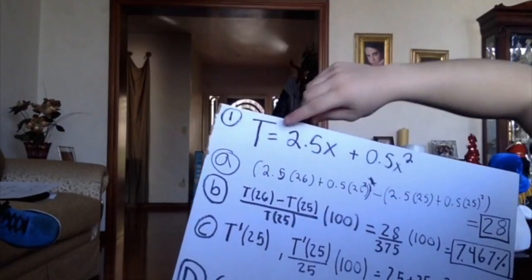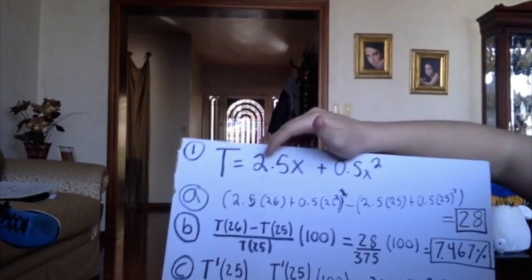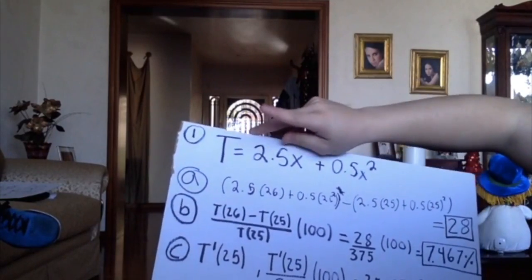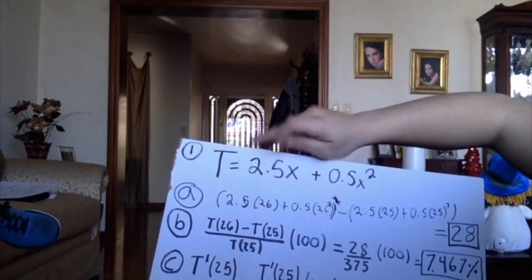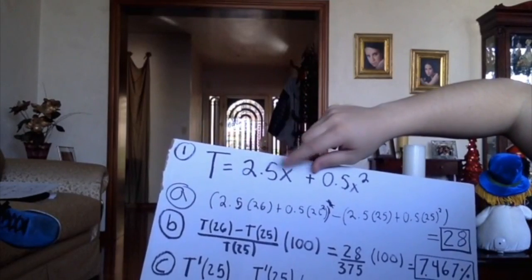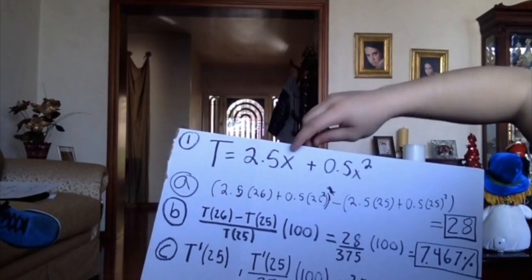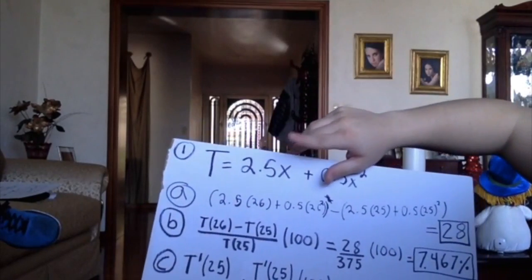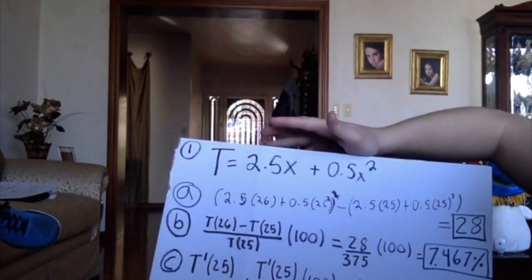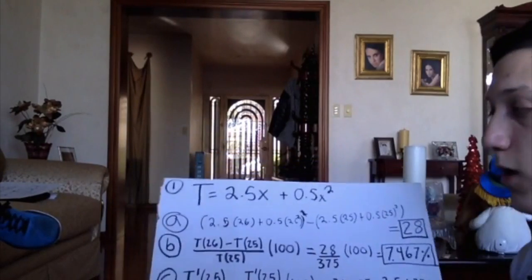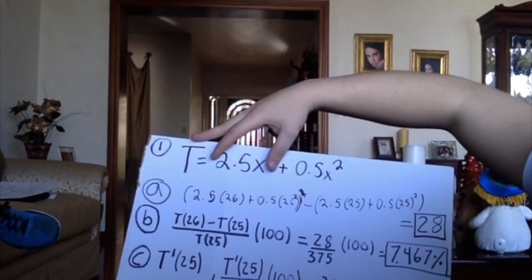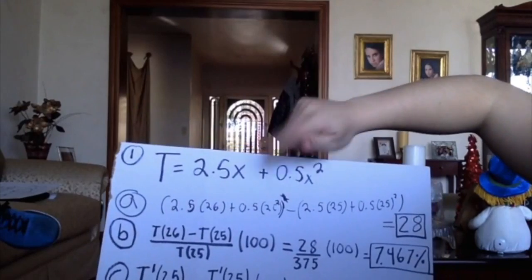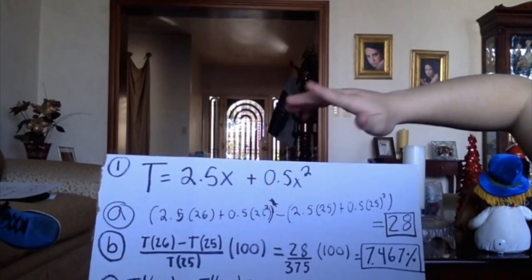So in the first part of this problem, we need to get the derivative of t. And to get the derivative of t, we need to first, in 2.5x, we need to subtract the exponent of x that is 1 minus 1, and it will give you 0. And x to the power of 0 equals 1.